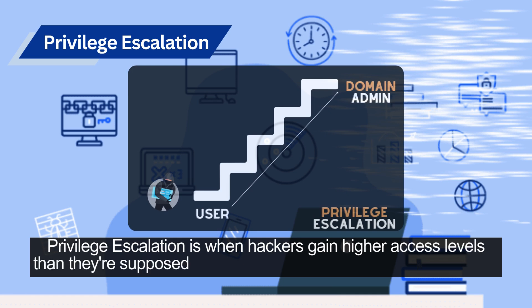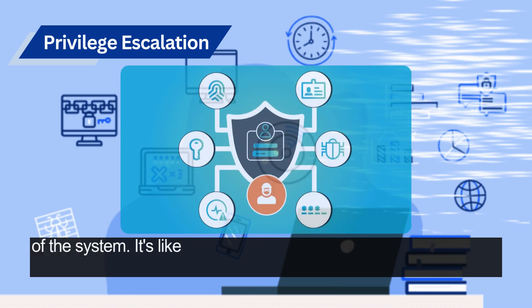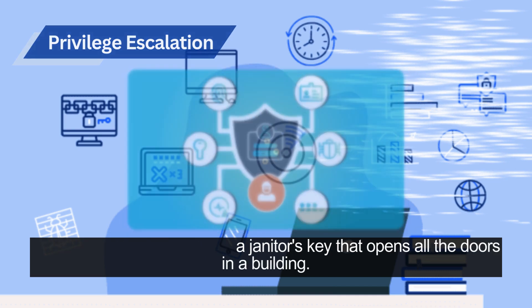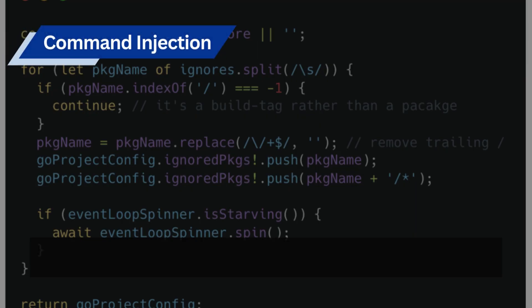Privilege escalation is when hackers gain higher access levels than they're supposed to have. This can allow them to control more of the system. It's like finding a janitor's key that opens all the doors in a building.